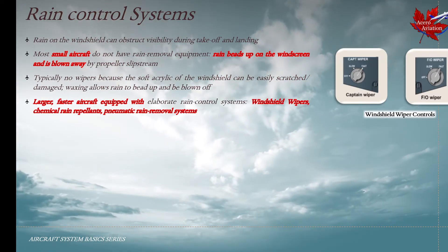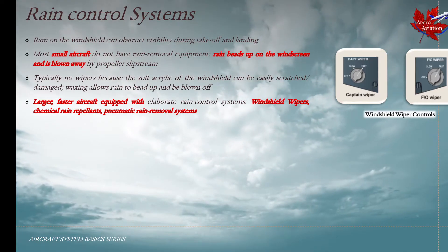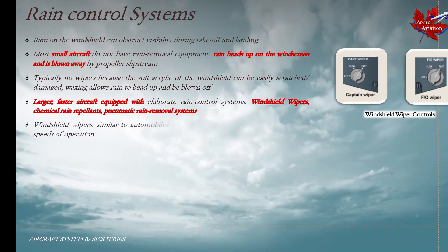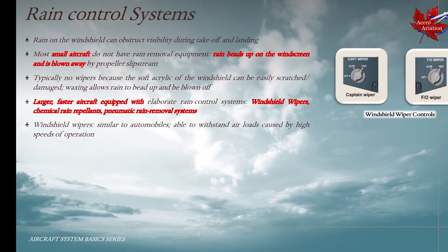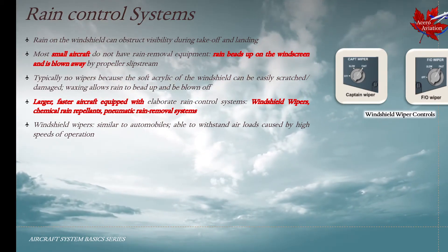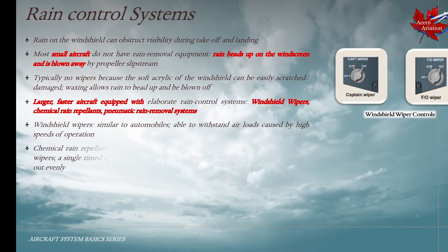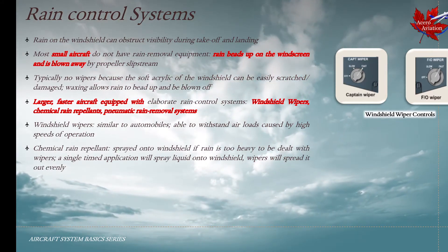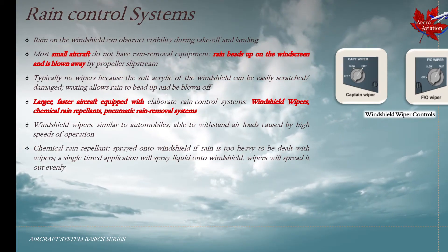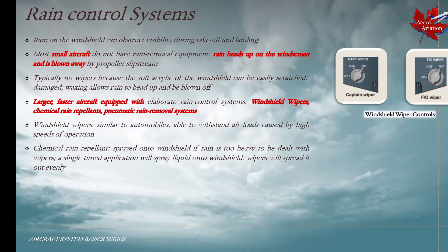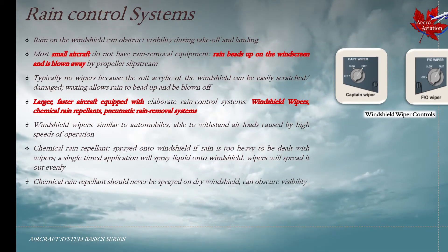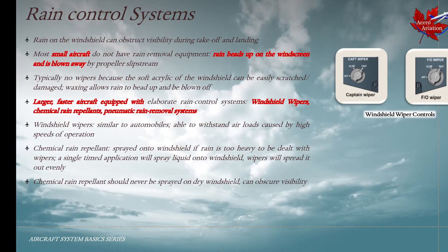Larger, faster aircraft are equipped with elaborate rain control systems. They have windshield wipers, chemical rain repellants, and pneumatic rain removal systems as well. Windshield wipers are similar to those found in automobiles, except the ones in aircraft are able to withstand high air loads caused by high-speed operations. Chemical rain repellants are sprayed onto the windshield if the rain is too heavy to be dealt with by wipers. A single timed application of this fluid sprays onto the windshield and the wipers spread it out evenly. Chemical rain repellants should never be sprayed on dry windshields because that can obscure visibility.